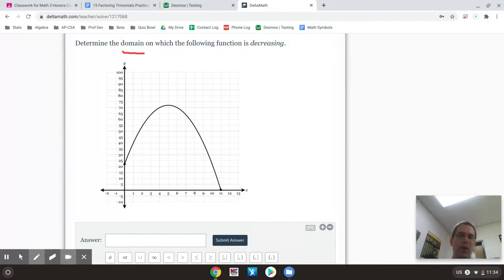In fact, anytime we're talking about interval notation with graphs, we're using x values unless it specifically asks for range. If it asks for range explicitly, then we do use range. Otherwise, we're going to be using domain or x values. So this one is talking about where is it increasing and where is it decreasing.